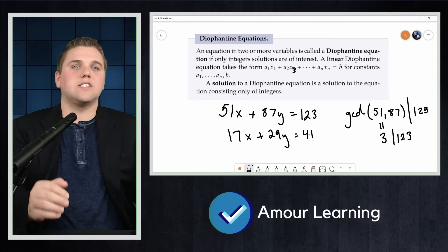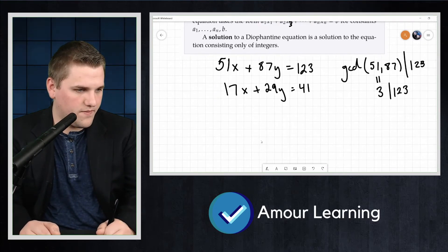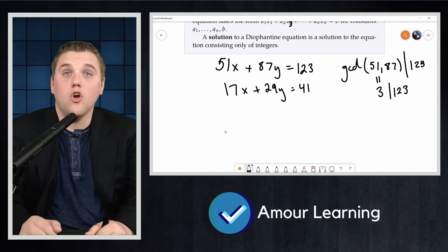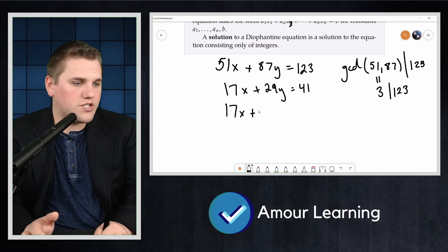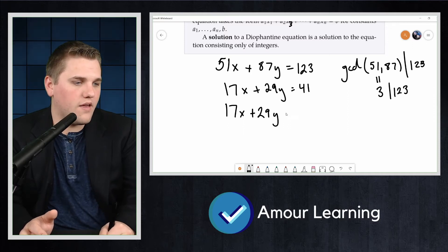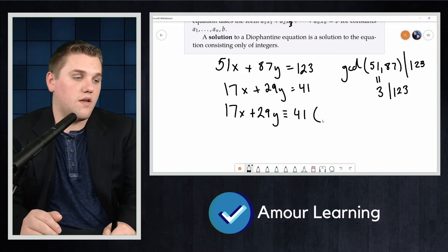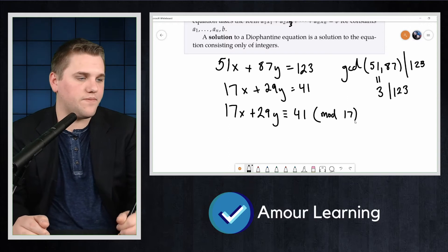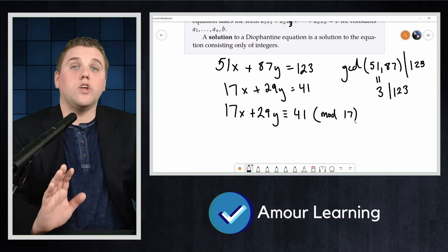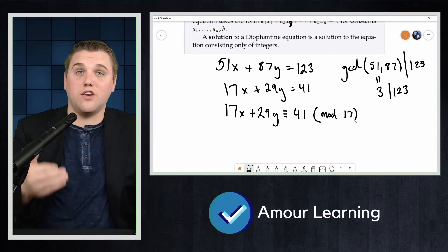Thus we can safely write that 17x + 29y is congruent to 41 mod 17. We choose 17 because 17x will have remainder zero.